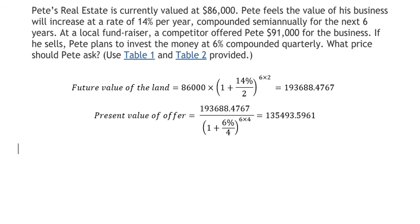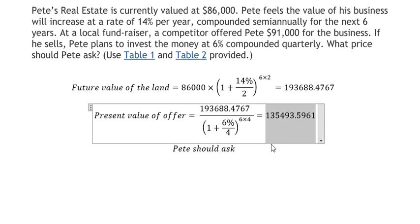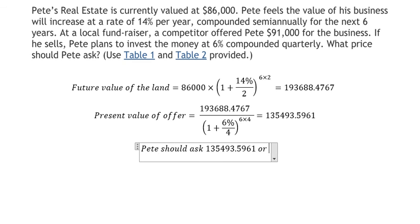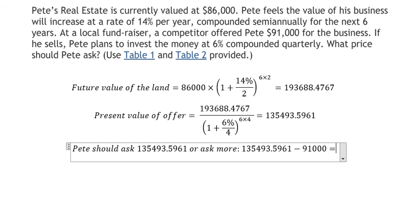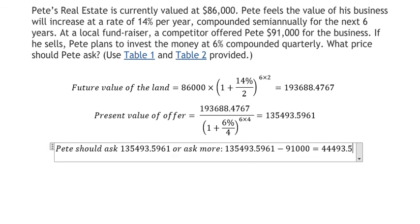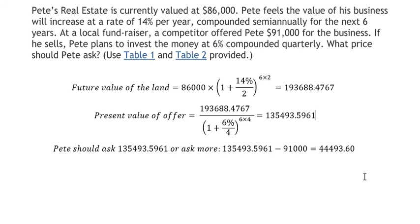After calculating, we can conclude that Pete should ask this price, or ask more. We use this number minus the $91,000 offer, and we get the answer: $44,493.60. So we round this number, and this is the answer to the question. That's the end, thank you for watching.